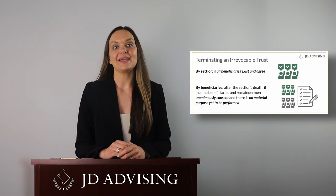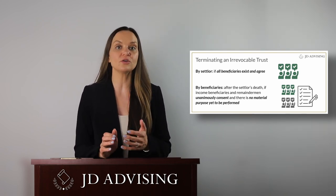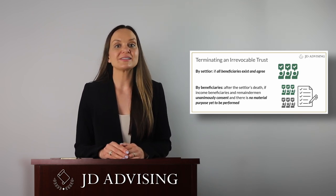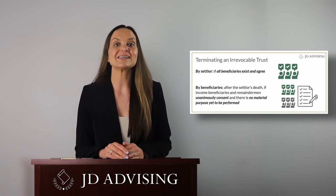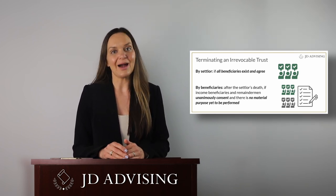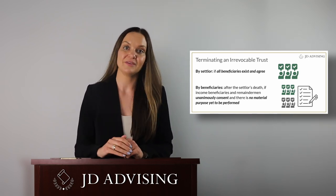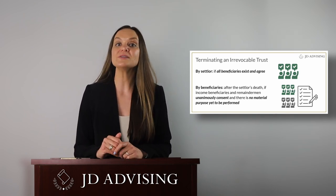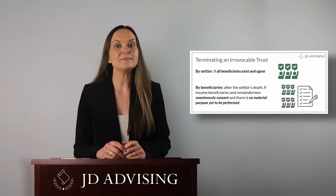The next highly tested topic is the revocability of a trust. Under the Uniform Trust Code, or the UTC, an inter vivos trust is presumed to be revocable unless the instrument states otherwise. A revocable trust is amendable even if the instrument does not expressly grant the settlor the power to amend. If a trust is revocable, a settlor may terminate it at any time. If a trust is irrevocable, the settlor may terminate the trust if all beneficiaries are in existence and agree. After the settlor dies, an irrevocable trust can be terminated if both the income beneficiaries and the remaindermen unanimously consent and if there is no material purpose of the trust yet to be performed.